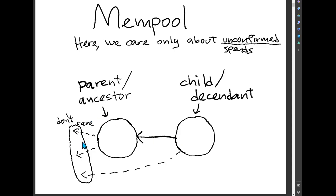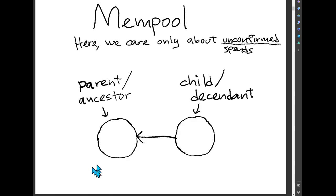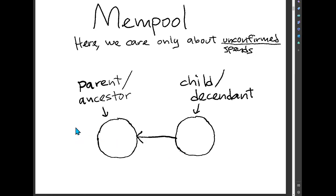For the purpose of this presentation, we're only going to care about unconfirmed spends — unconfirmed outputs. So all the dashed-line stuff we're just going to leave off and not include it anymore in these diagrams. There we've simplified it. This is showing just two mempool transactions, a parent and a child. These have other inputs referring to other UTXOs, but those are all in confirmed blocks — we're not going to show those.